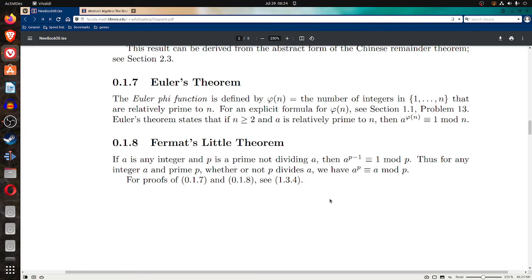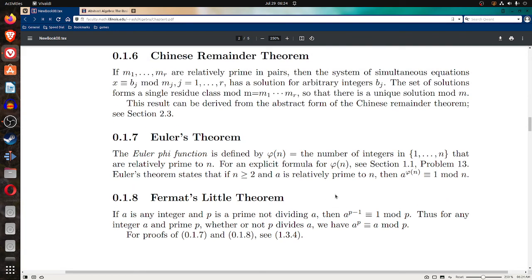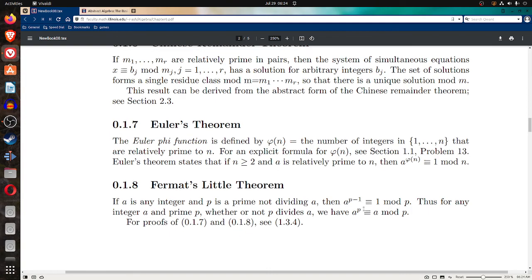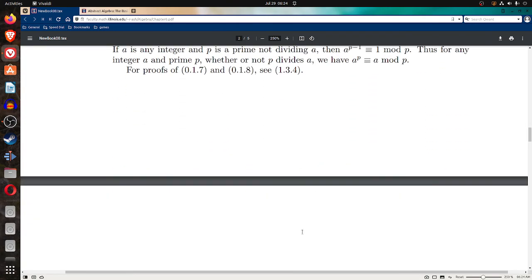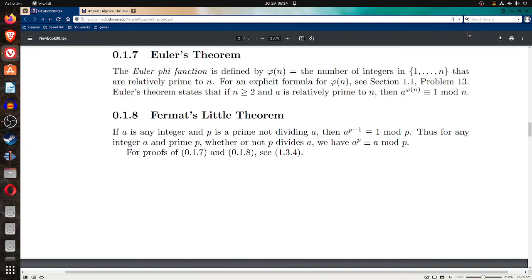So that's Fermat's Little Theorem. A to the p minus 1 is congruent to 1 mod p. A is any integer, p is a prime that does not divide a. Now for proofs of Euler's Theorem and Fermat's Little Theorem, those will be in section 1.3.4.